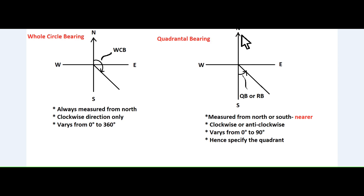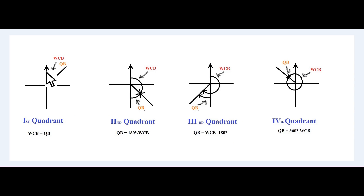If a line is laid in the 1st quadrant, the quadrant should be specified as North East. If the line is in the 2nd quadrant, the quadrant should be specified as South East. So in this figure, if a line is laid in the 1st quadrant, the whole circle bearing is measured from the magnetic north in clockwise direction only. In quadrantal bearing system, if a line is laid in the 1st quadrant, the angle is measured from the north because the line is more nearer to the north. Hence, in the 1st quadrant, the whole circle bearing and quadrantal bearing angles are the same.